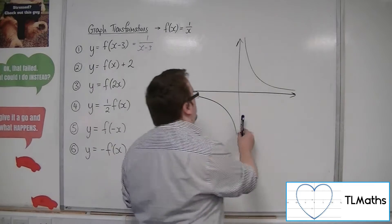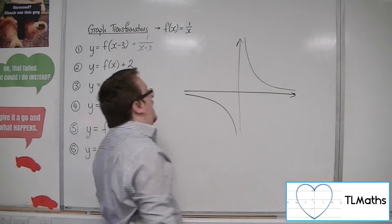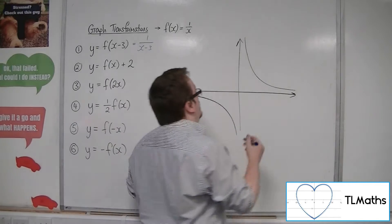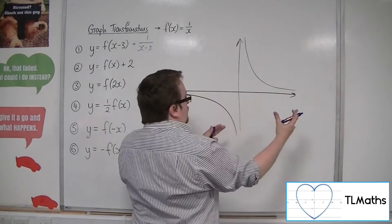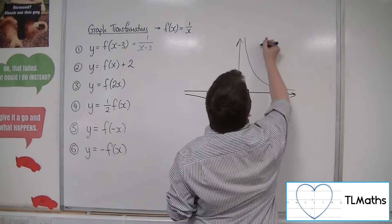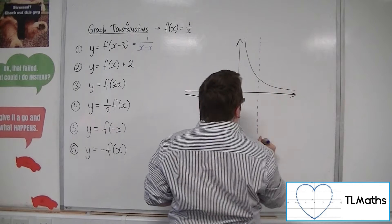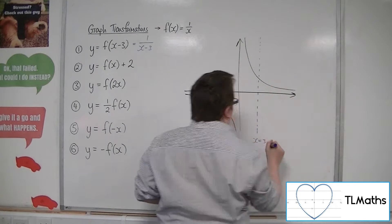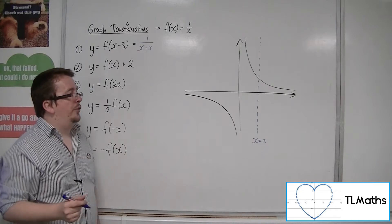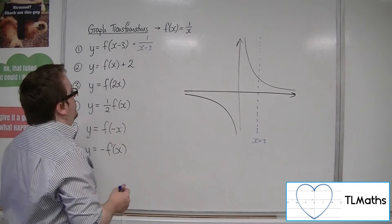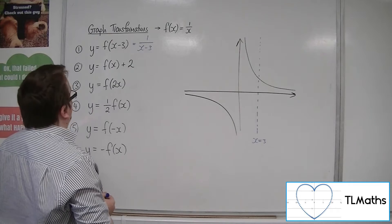Because we have this asymptote at the y-axis, that's x equals 0, if I move that 3 units to the right, well, it's got to move 3 units to the right with the whole bit of the curve. So, we now have a vertical asymptote at x equals 3. The horizontal one will just stay as it is. But that one will move.